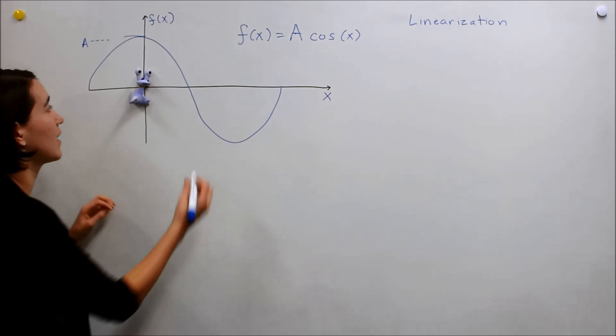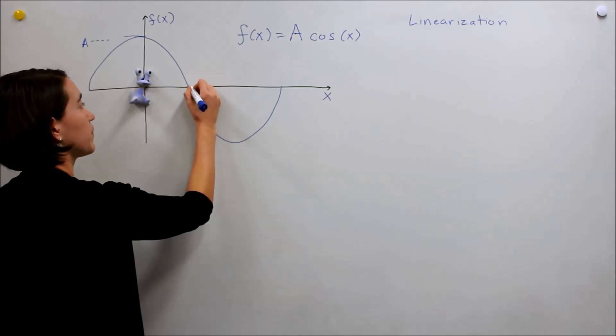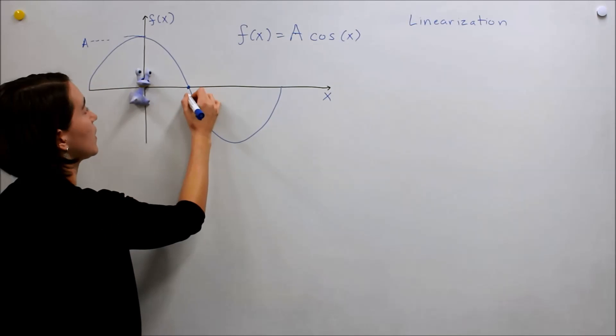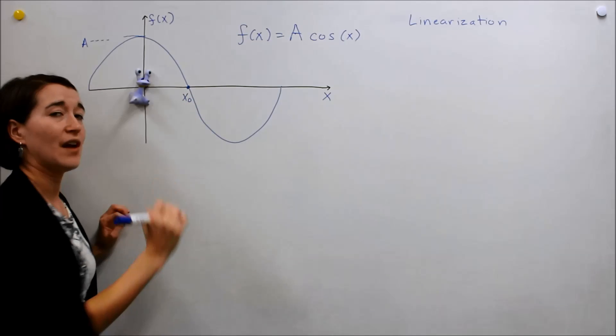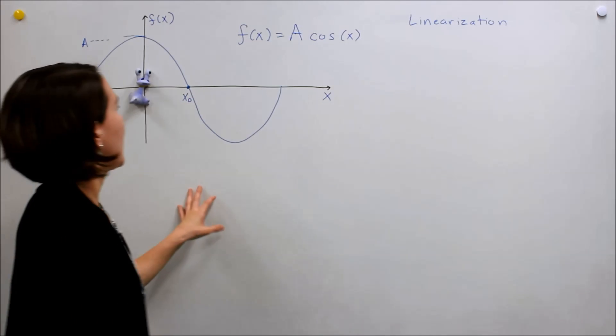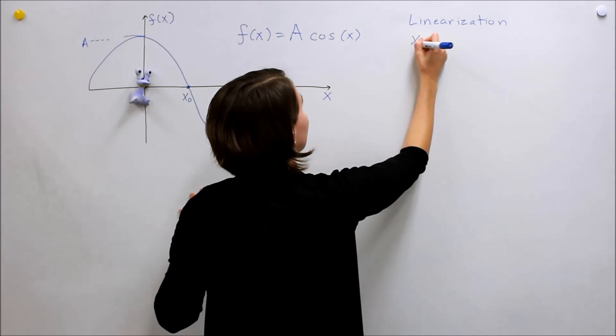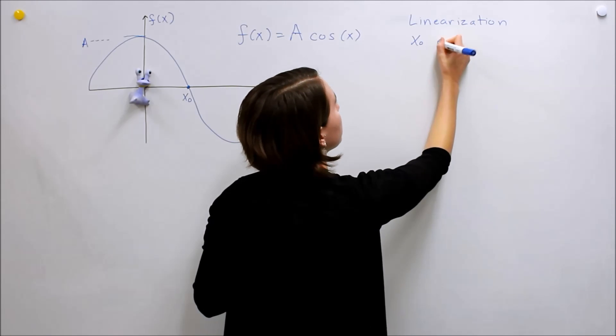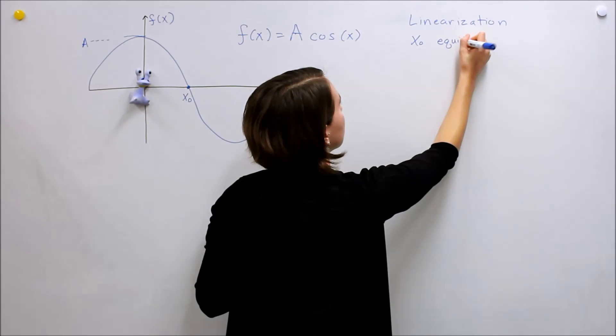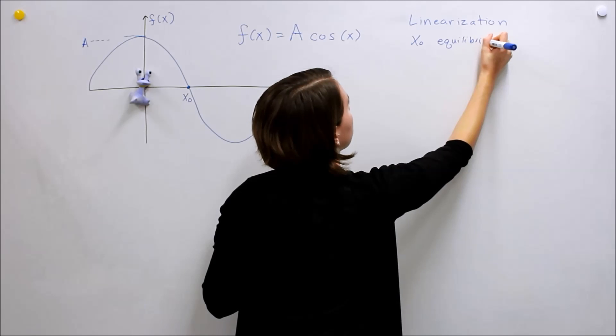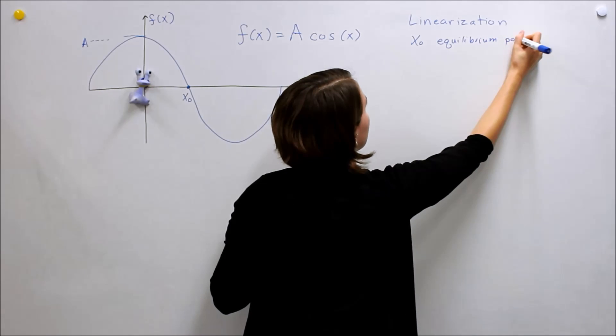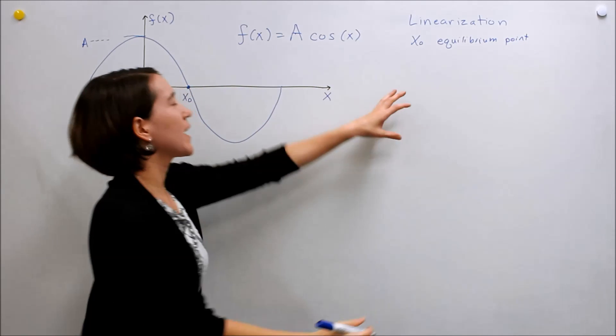This is the point we're going to linearize, and we're going to call this x₀, and x₀ is what we call our equilibrium point. And we're picking it to be zero.